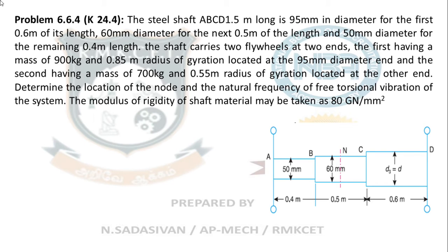A steel shaft ABCD, 1.5 meters long, is 95 mm diameter in the first 0.6 meter of its length, 60 mm diameter in the next 0.5 meter, and 50 mm diameter for the remaining 0.4 meter length. The shaft carries two flywheels at the two ends — the first having a mass of 900 kg and 0.85 meter radius of gyration at the 95 mm diameter end, and the second having 700 kg and 0.5 meter radius of gyration at the other end.